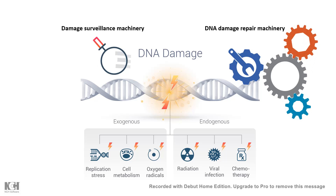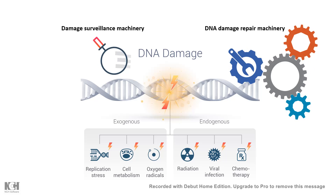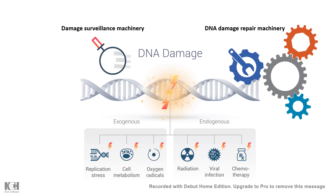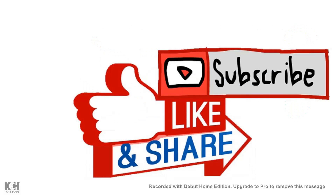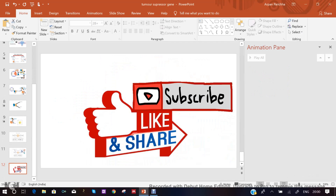Tumor suppressor genes are absolutely important for normal growth, checking normal growth and ensuring uncontrolled growth cannot happen. I hope you enjoyed this video — if you like it, give a quick thumbs up, don't forget to like, share, and subscribe. Thank you.